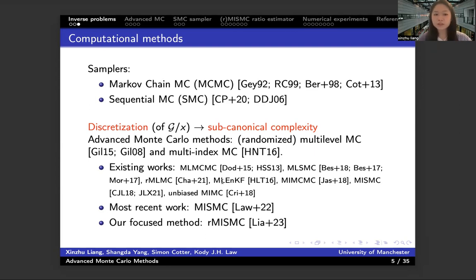Here we use another sampler called the sequential Monte Carlo (SMC) sampler. The setup of this sampler is a little bit harder than the MCMC, but it is much more efficient than MCMC and can deal with multi-modal distributions. Moreover, in practical use there is good interest in it, and one can introduce parallel computing in the SMC sampler straightforwardly and naturally.